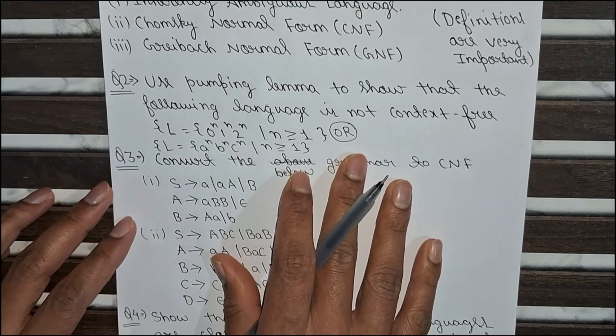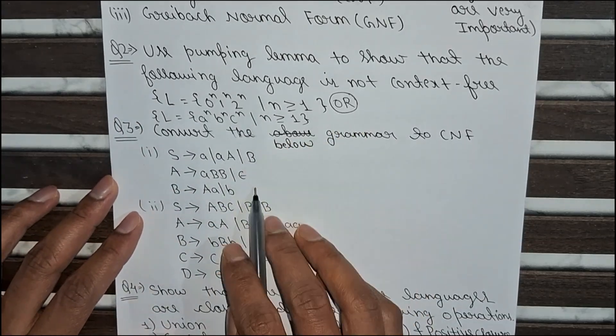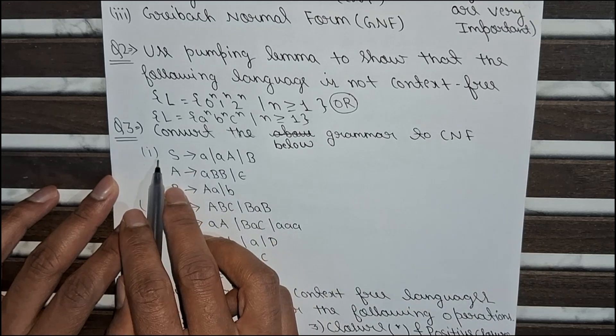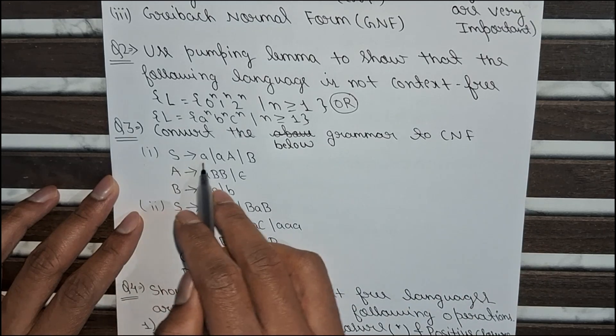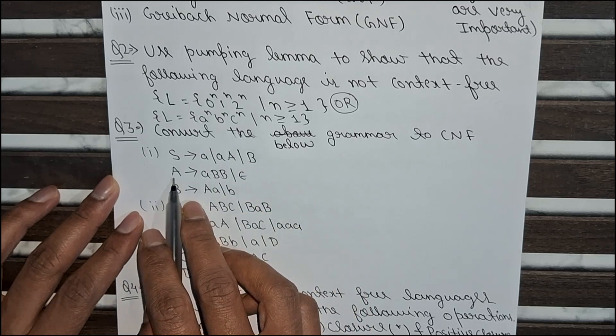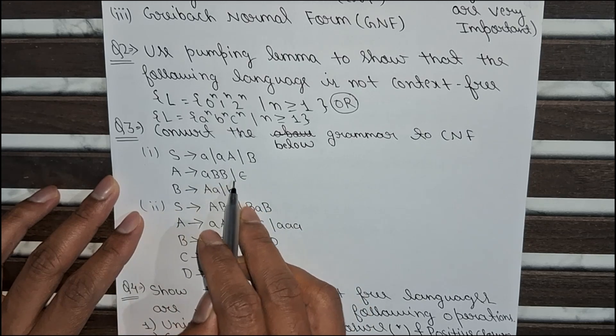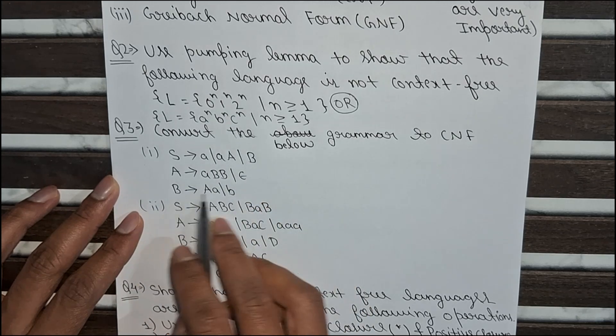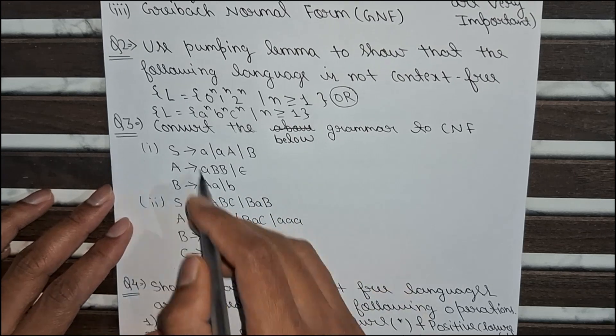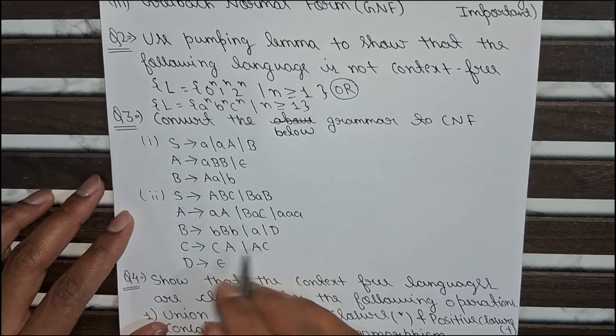Now the third question is, convert the below grammar to Chomsky Normal Form. First grammar is, where S implies small a, small a, a, capital B. Here A implies a, b, b and epsilon, and B implies a, a and b. Like this, this grammar. You have to convert.